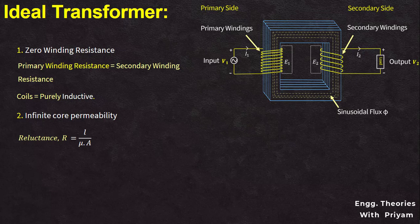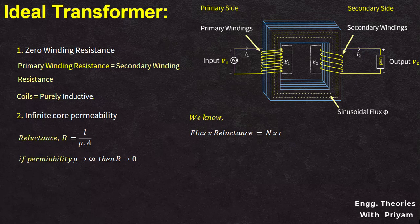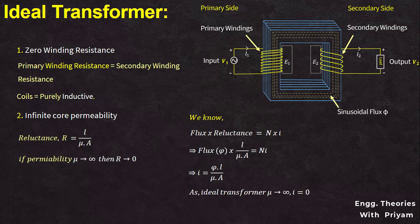We know that reluctance R equals L divided by μ times A. If permeability μ tends to infinity, then reluctance R tends to zero, where L and A are the length and cross-sectional area of the magnetic circuit. From the relation flux × reluctance = N × I, substituting R = L/(μA), we get I = φL/(μA). For an ideal transformer, μ tends to infinity, so current I equals zero — meaning no current is required from the supply to magnetize the core under no-load condition.